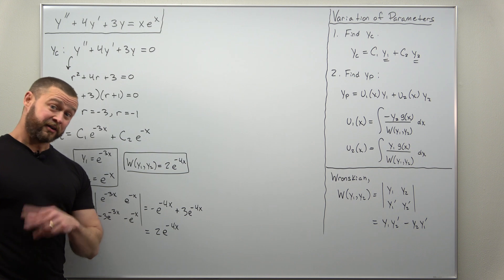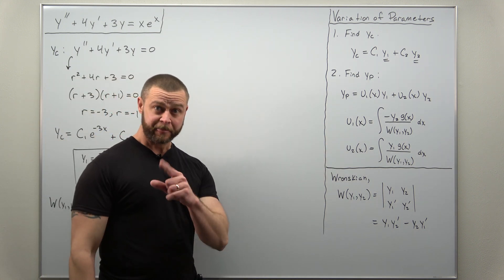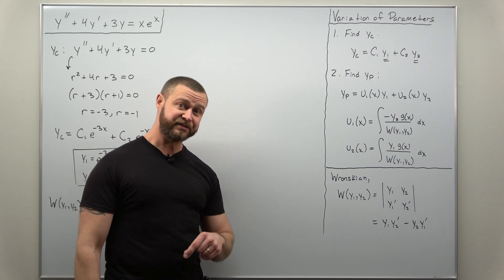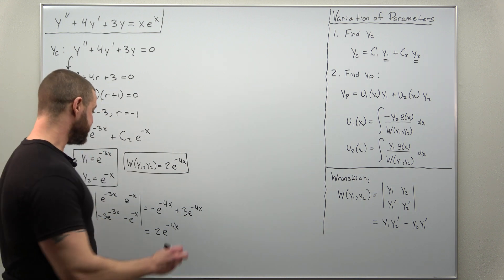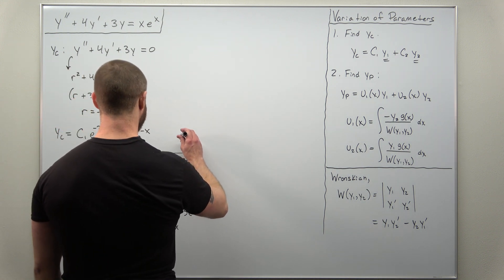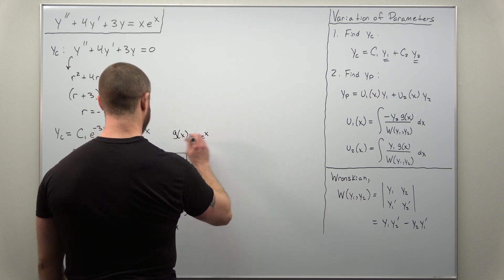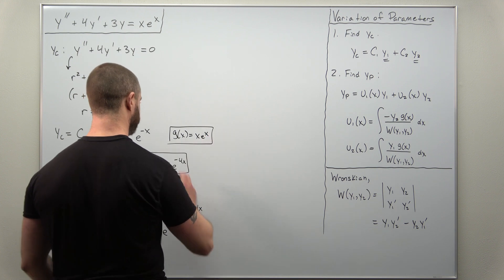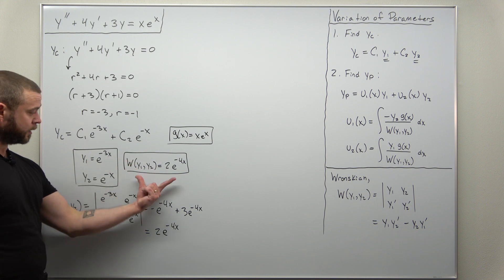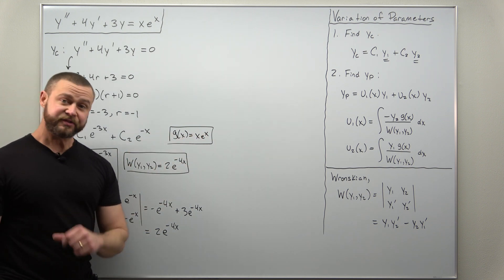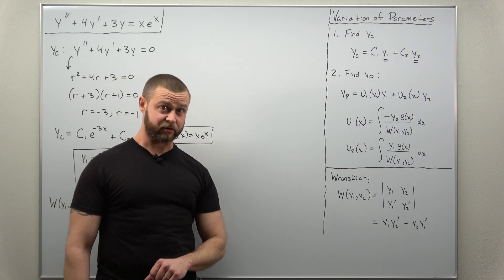The only other term we need to apply the integral formulas for u1 and u2 is the non-zero right-hand side, g of x, which is x times e to the x. We now have everything we need — y1 and y2, the Wronskian, and g of x — and we're just going to plug those in and evaluate those integrals.